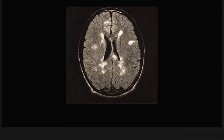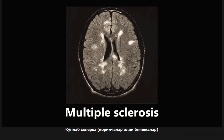This next one is a brain MRI — and this is an example of multiple sclerosis. What you're seeing here are these periventricular plaques — these areas of white around the ventricles. If you see this scan, it's almost a dead giveaway for multiple sclerosis. There's really nothing else that looks like this.